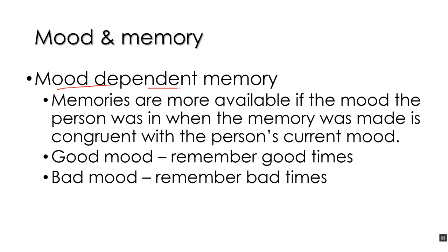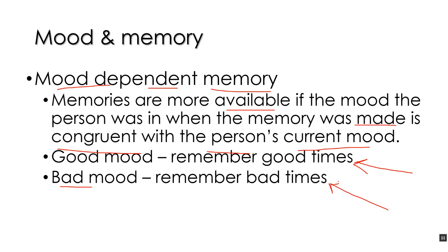The first one is mood-dependent memory. This is when memories are more available — it's easier to remember memories if the mood the person was in when the memory was made is congruent with the person's current mood. If you're in a good mood right now, you're going to remember good times and good things, because those are memories from when you were in a good mood in the past. Likewise, if you're in a bad mood now, you are going to be more likely to remember bad things or times when you were in a bad mood. The dependence is that there's congruence between the mood when the memory was laid down and your recall mood as you are right now.